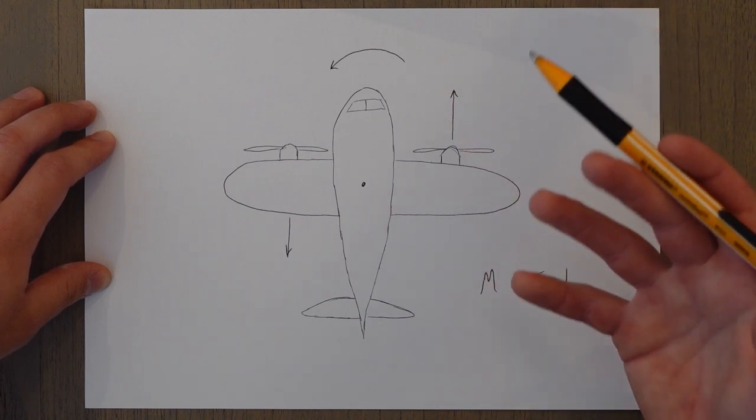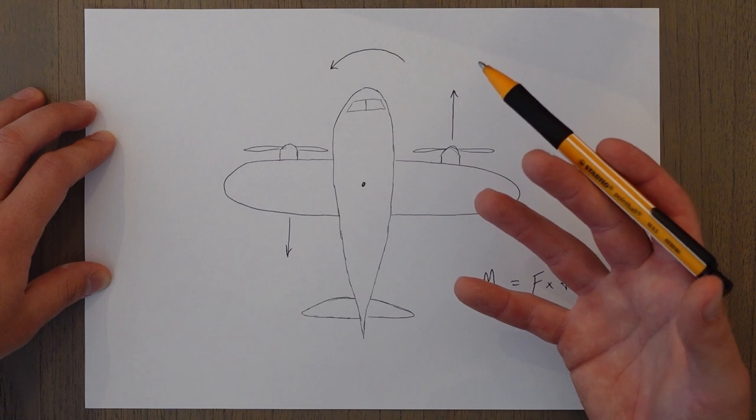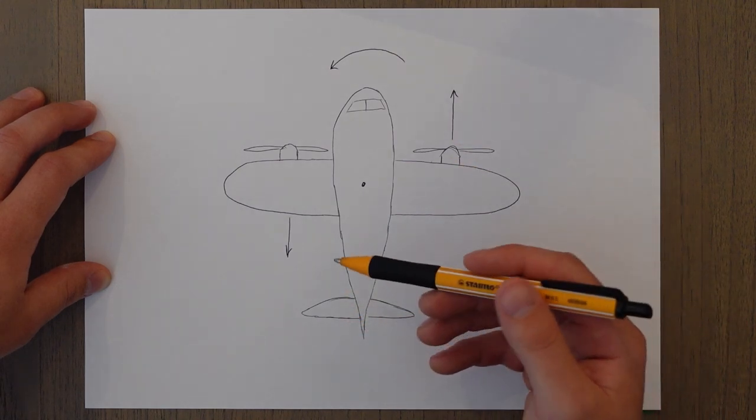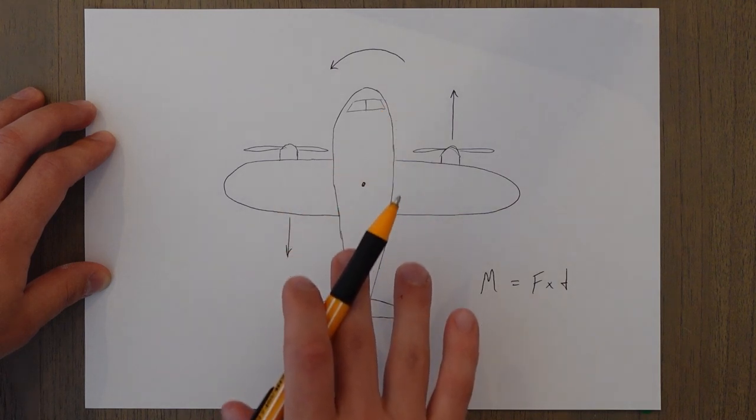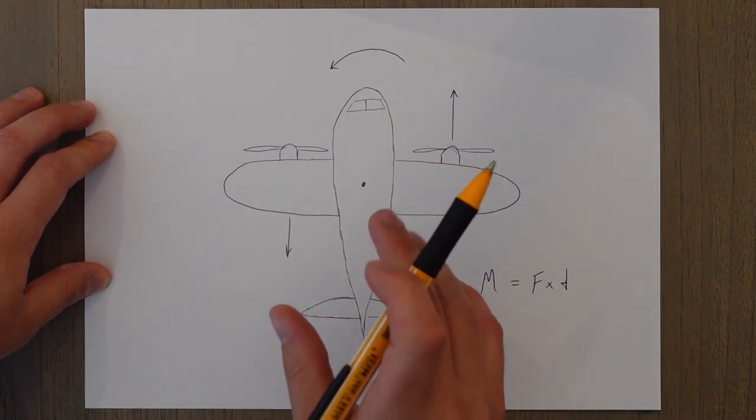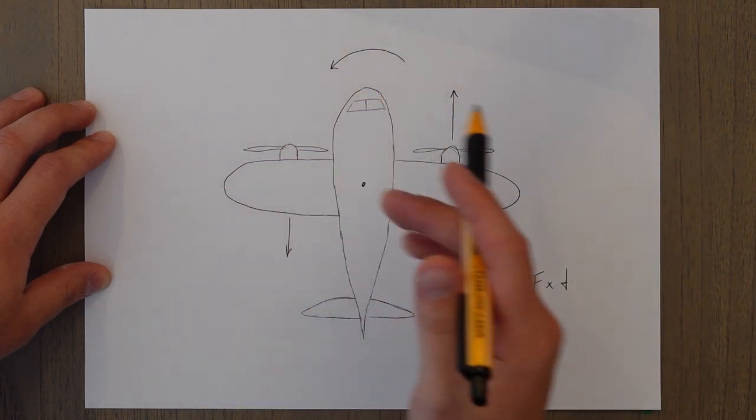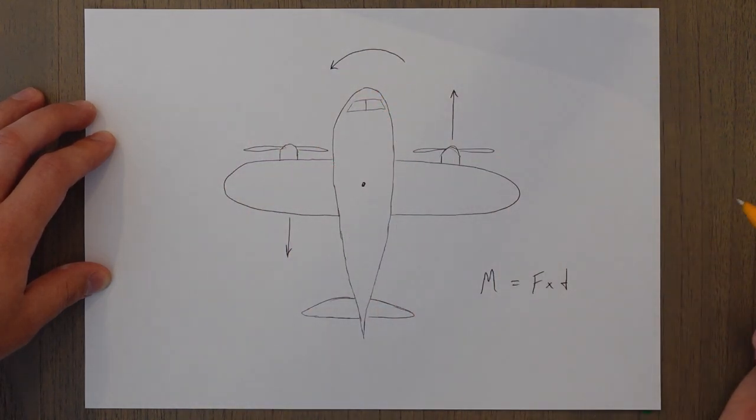So on something like a private jet like a G650, the engines are tail mounted so they're not going to be that far away in terms of distance from the centre of gravity. But something like an A350 where the engines are quite far out, then you get a very severe problem.